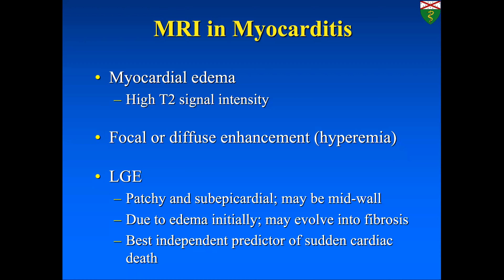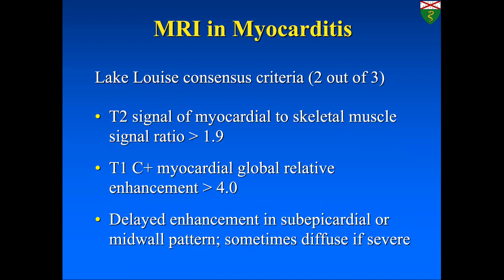T1 mapping (native and post-contrast) is another useful tool. Recent studies show that the combination of LGE, T1 mapping, and T2 mapping may be the best way to identify acute myocarditis. In chronic myocarditis, LGE alone has better accuracy than T1 mapping, but accuracy increases when combined. The classic Lake Louise consensus criteria for myocarditis requires two out of three: T2 signal myocardial-to-skeletal muscle ratio greater than 1.9, T1 post-contrast ratio greater than 4, and delayed enhancement in a typical subepicardial or mid-myocardial distribution.